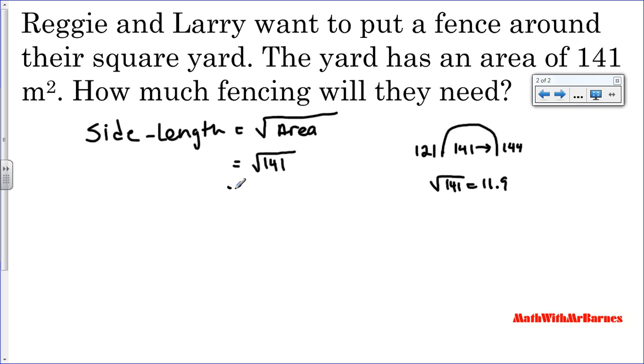So we'll estimate that. And any time we estimate, we use the dot. You can also just put it in your calculator if that was your objective. So how much fencing do we need? So this is a square yard. A square has four sides. So what I need to do is multiply this by four.